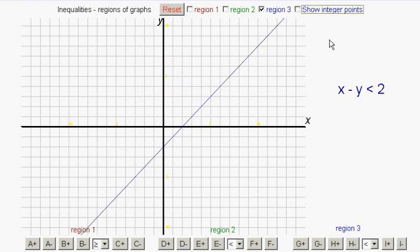Now, here we have a slightly more tricky example. Suppose we're asked to represent the inequality x minus y less than 2. Well, if we draw the line x minus y equals 2, we get that one. But we have to decide which side of the line our points are.